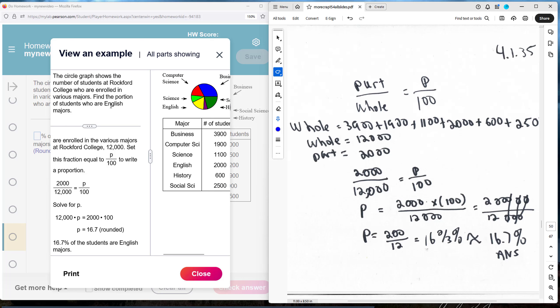Find the portion or percentage of students who are English majors. So we have to find a part, we have to find a whole. To find the whole, we can add up all the parts. So we add up all the parts here, and it adds up to 12,000.